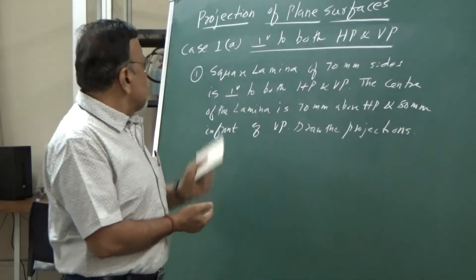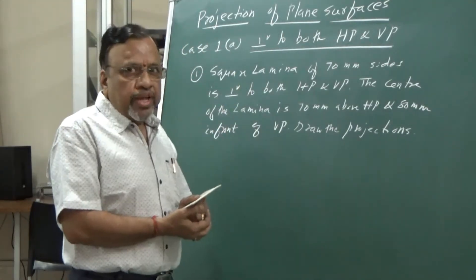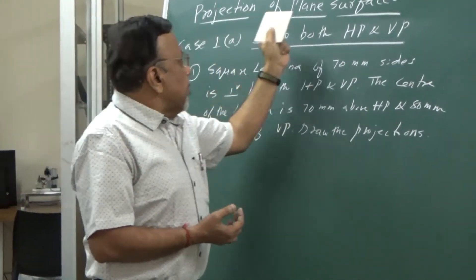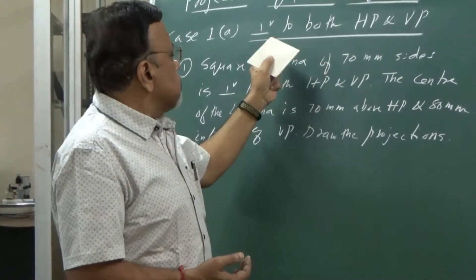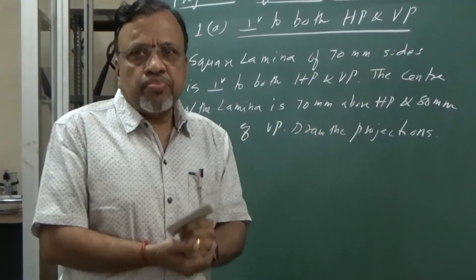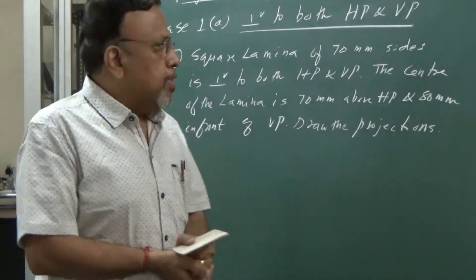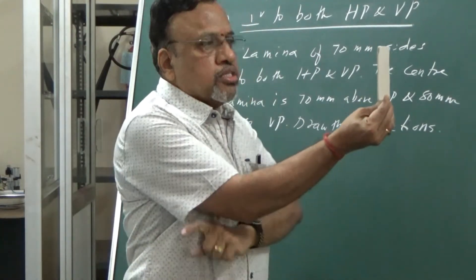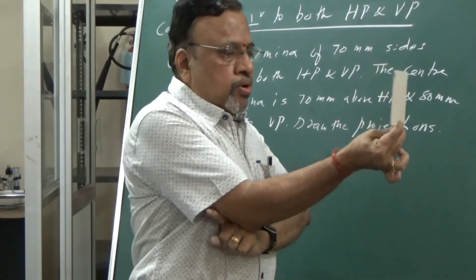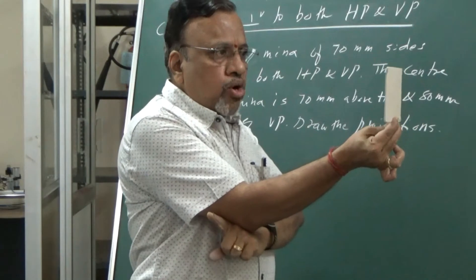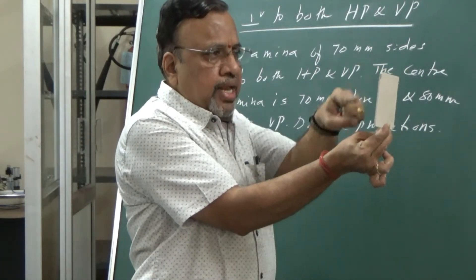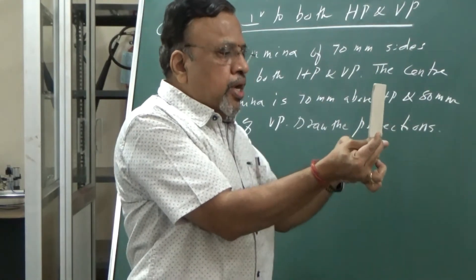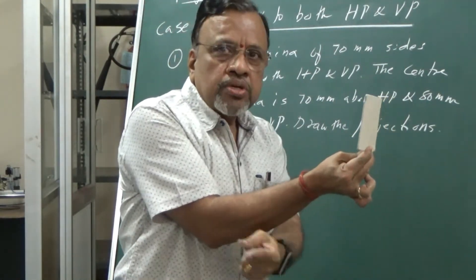Now let us start with Case 1A, wherein we consider a case where a plane surface or lamina is perpendicular to both HP as well as VP. Since the lamina is perpendicular to both HP and VP, it should be held like this. We can see that this particular lamina is not only perpendicular to VP, it is also perpendicular to HP.